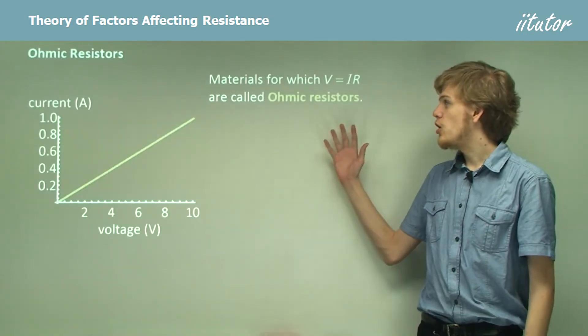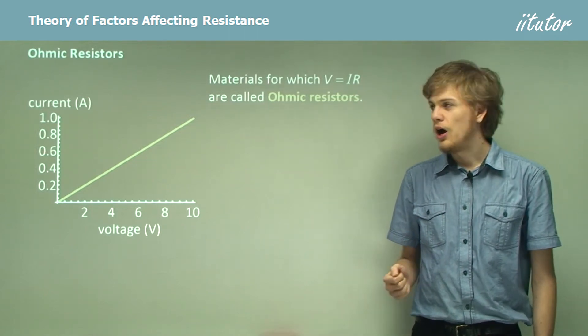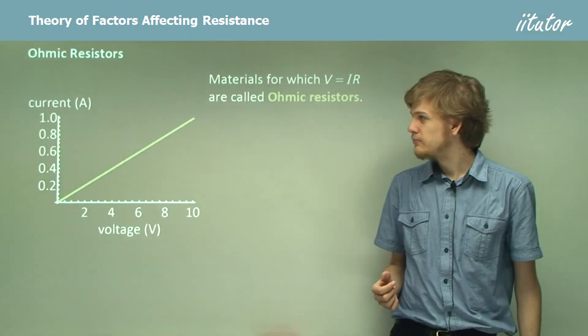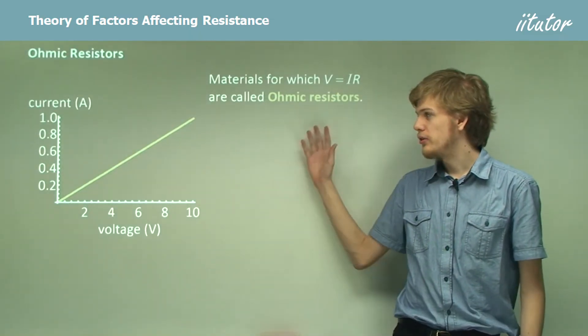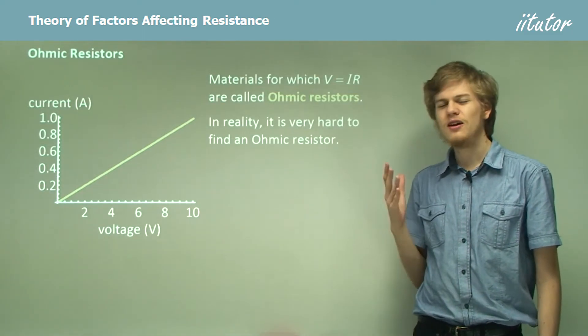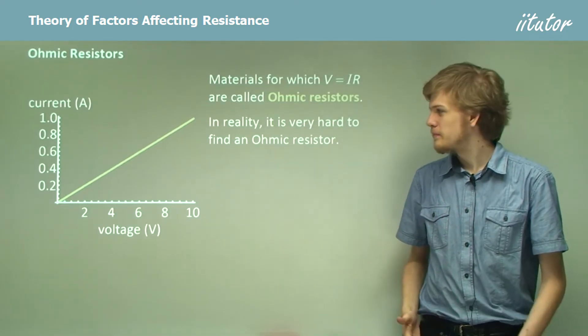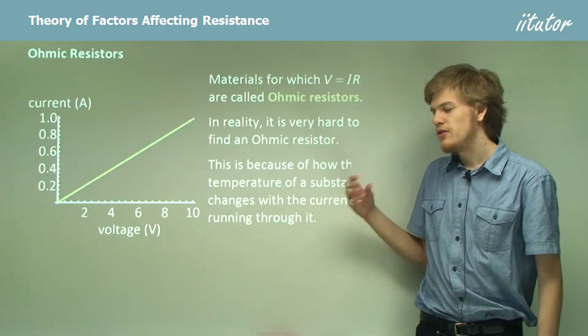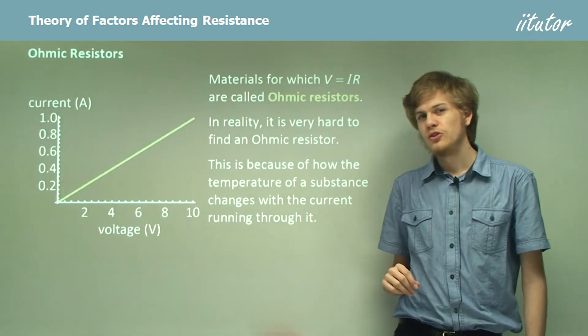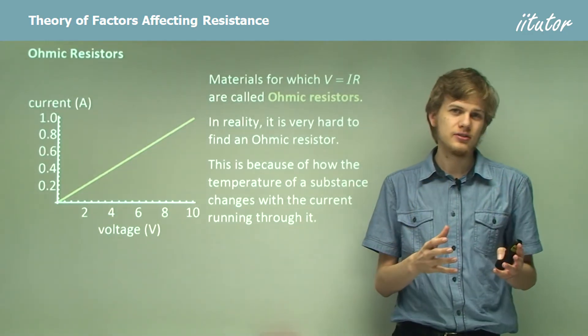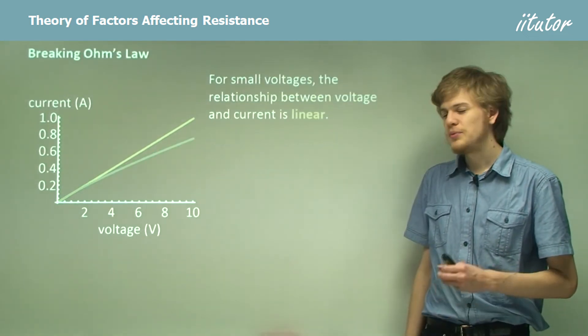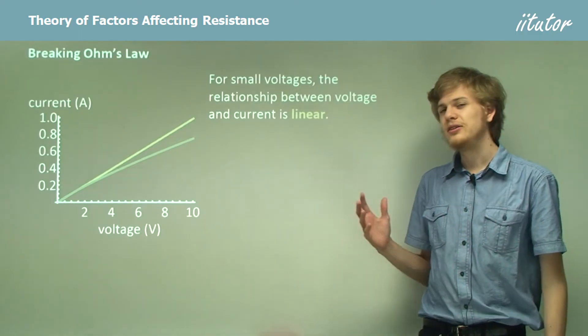So materials which obey Ohm's law, V equals IR, are called Ohmic resistors. They follow Ohm's law. And so the graph of the current through a material like this might look something like this. In reality though, it's very hard to find an Ohmic resistor. They don't really exist. The reason for this is because the more current we push through a resistor, the higher its temperature goes. So we can't actually keep the temperature fixed if we want to measure the current through a resistor. This means that most materials aren't in fact Ohmic resistors.